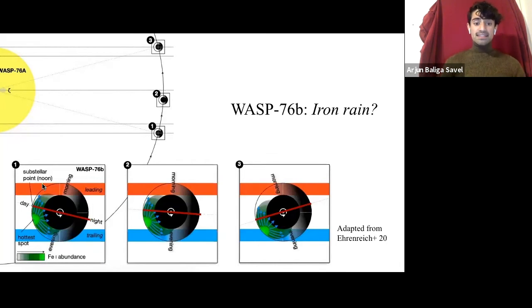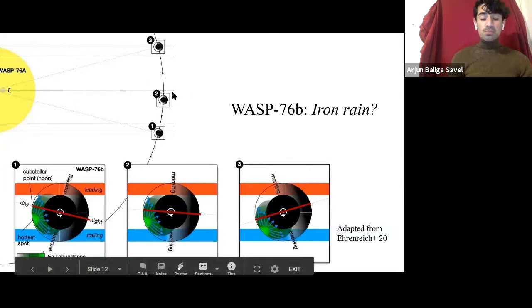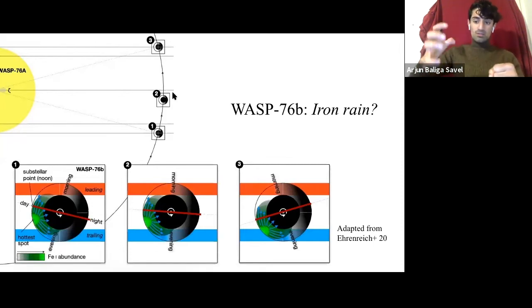So first of all, each of these inset figures represents a diagram of this planet at a different point in its orbit. And those different points are also shown above here, 1, 2, and 3. This solid line that's shooting through this planet, that's pointing directly to the star. And at each point in its orbit, as it marches along orbiting its host star, the same side of WASP-76b is always facing its star, much like how the same side of the moon is always facing the Earth. And because of this, we start to see some very exacerbated temperature differences. This side of the planet that's always facing its star, that's in perpetual sunlight, starlight rather, that's going to be very, very hot on the order of a couple thousand degrees Kelvin.